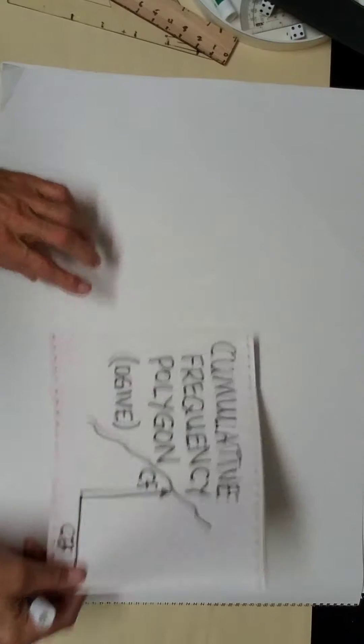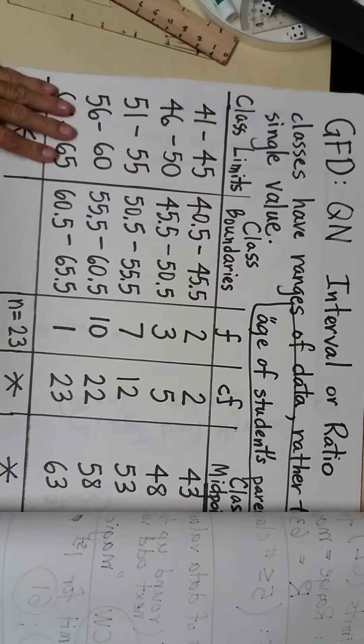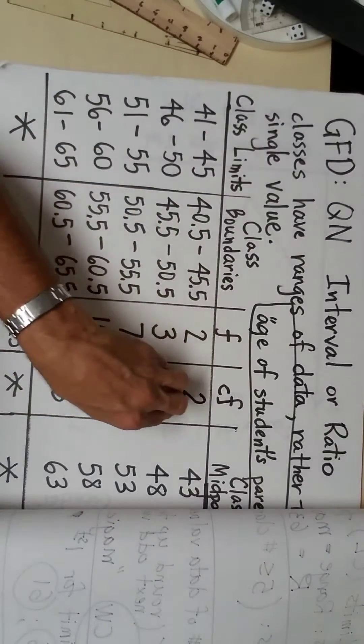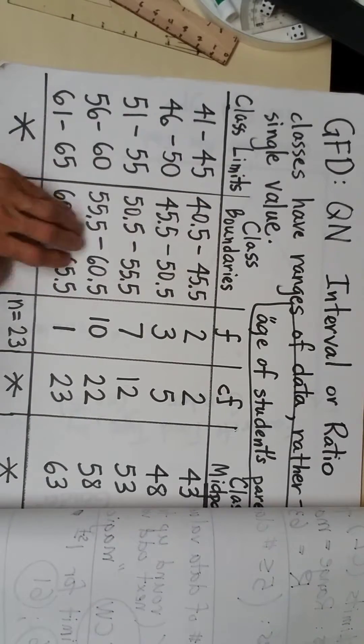So let's reference back, we're going to use our ages of parents again. Reference back to our original problem, where we have class limits and boundaries. Now we need to use class cumulative frequency and class boundaries.